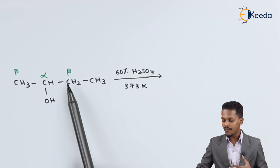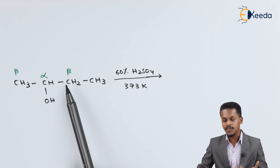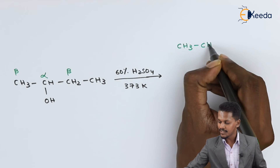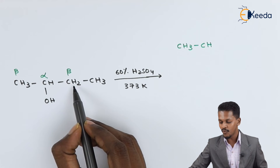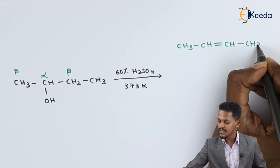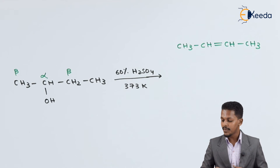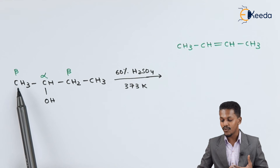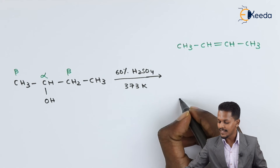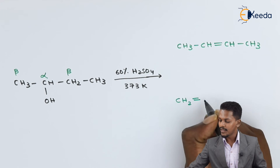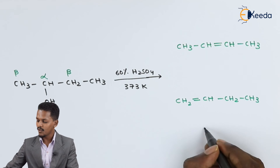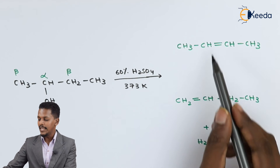If the hydrogen is removed from the first beta carbon atom, we get CH3-CH=CH-CH3. If the OH is removed along with the hydrogen from the other beta carbon atom, we get CH2=CH-CH2-CH3, along with the removal of water. So there are two possible products from butan-2-ol.